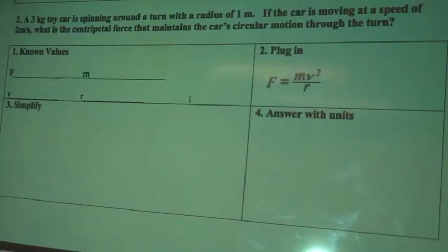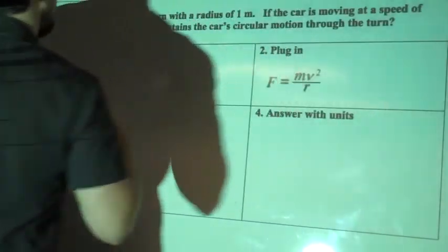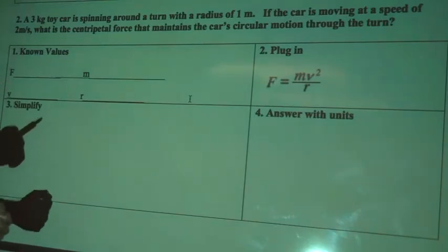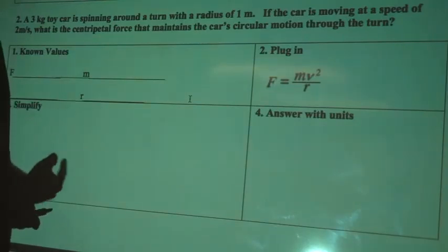All right, so number two says a three kilogram toy car is spinning around a turn with a radius of one meter. The car is moving at a speed of two meters per second, what is the centripetal force that maintains the car's circular motion through the turn.